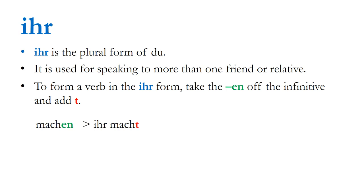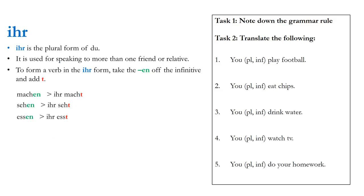So here we have machen, the verb 'to do or make' - ihr macht, you plural, do or make. Sehen, to see - ihr seht, you plural, see. Essen, to eat - ihr esst, you plural, eat. What I'd like you to do now is to note down the grammar rule, which is on the left hand side of the screen, then translate the following five sentences.